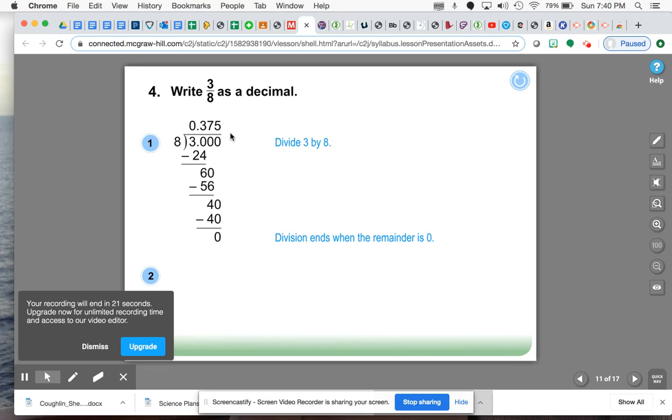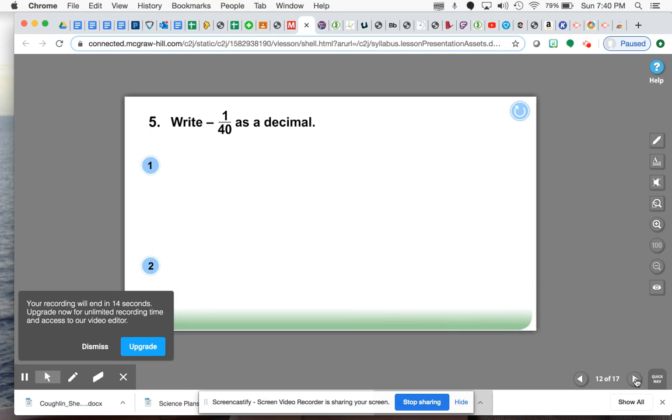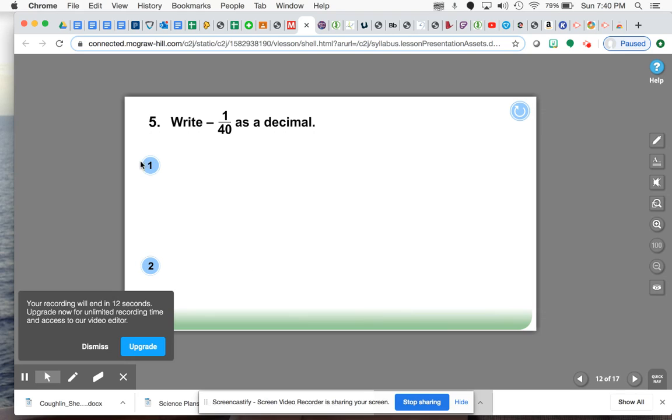When you finish that, you would get 0.375, or if you say it as a mathematician, 375 thousandths. So 3/8 is equal to 375 thousandths. Same with this one—you want to make sure that you change this one again. So you're going to divide and you would get 25 thousandths. All right guys, good luck.